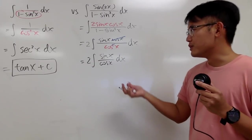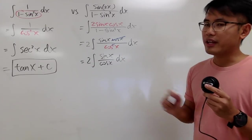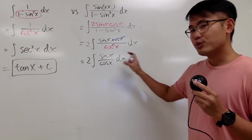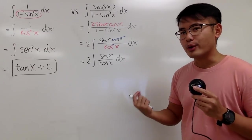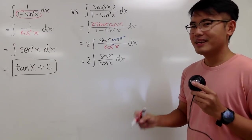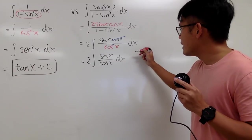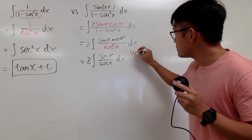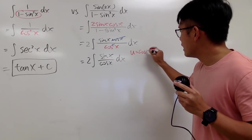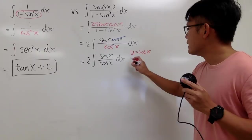And you might notice this is just 2 times the integral of tangent x. Depending on whether you know the integral of tangent x or not — if not, right here we can do a quick u-substitution. I will let u equal to cosine x.